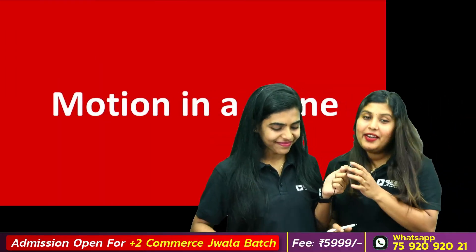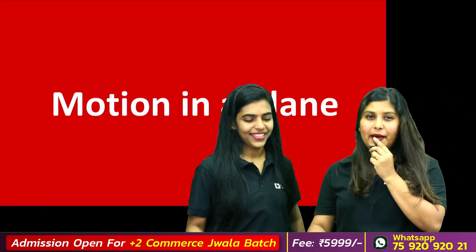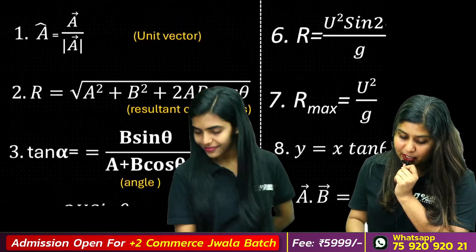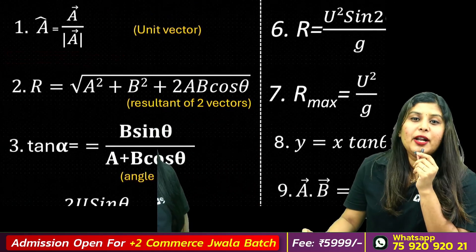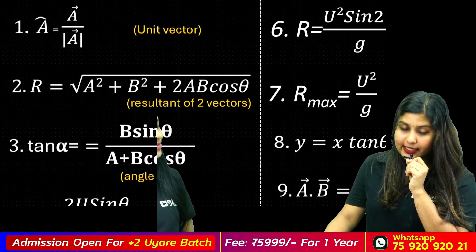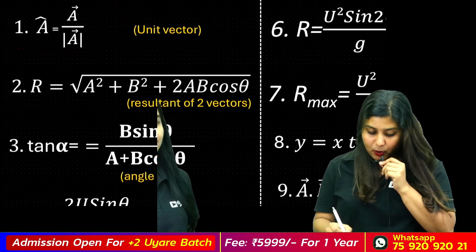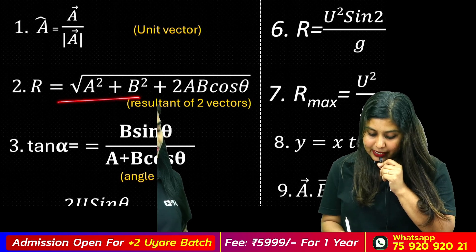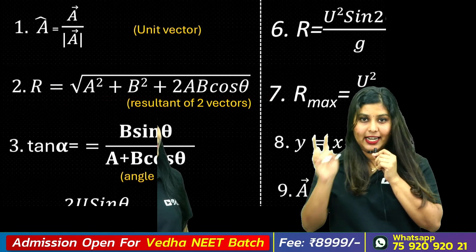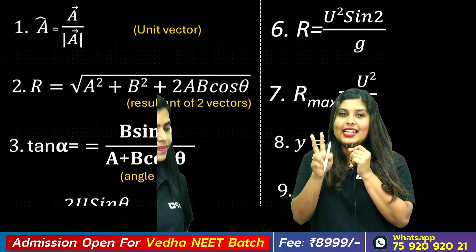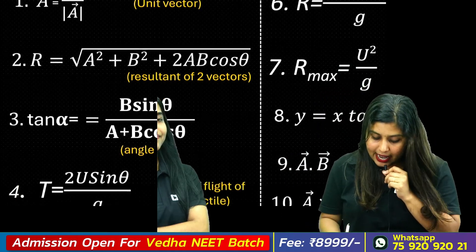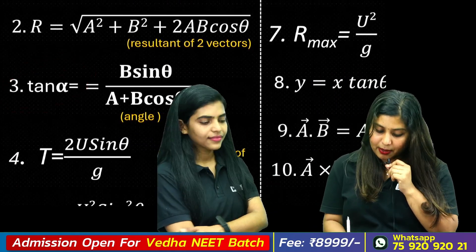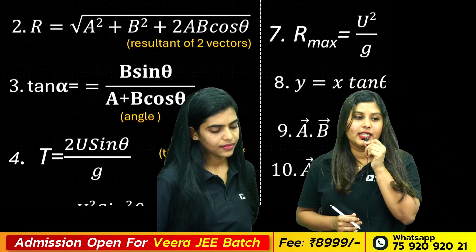Next, we will learn motion in a plane, including unit vectors and important vector operations. For the resultant of two vectors, the magnitude is found using the formula involving root of a squared plus b squared plus 2ab cos theta.